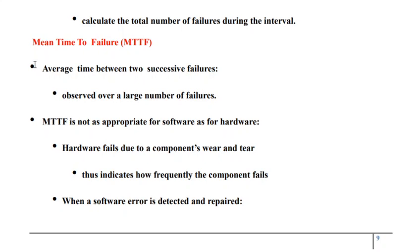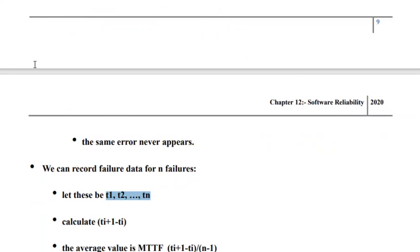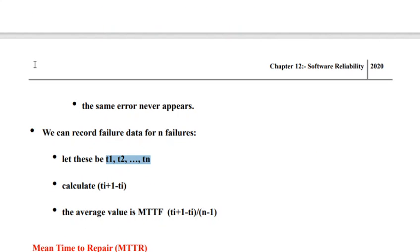Mean time to failure is relevant in the context of hardware, because in the case of a hardware system, the hardware fails because of wear and tear. The hardware system abruptly fails to perform an action, whereas in the case of software, when a software error is detected, the error is repaired and the software is put back to use. Whenever a hardware system fails it fails abruptly, and whenever a software system fails it gracefully degrades. So mean time to failure is much more relevant in the context of hardware.